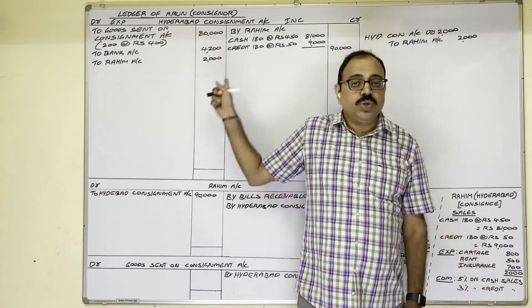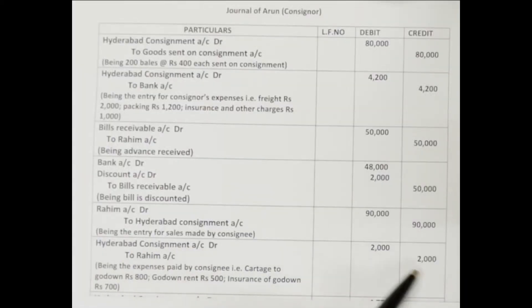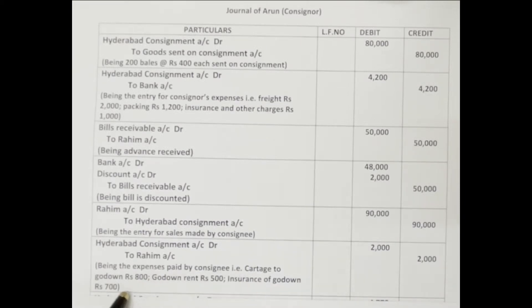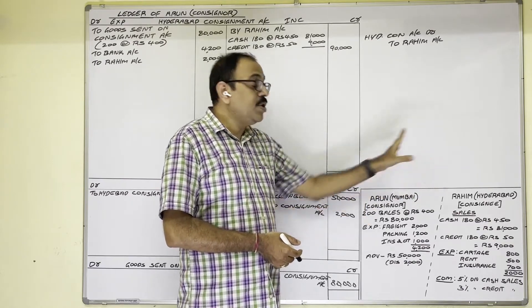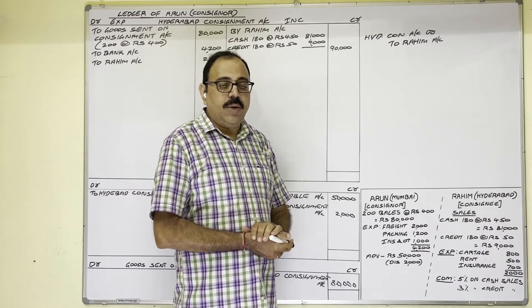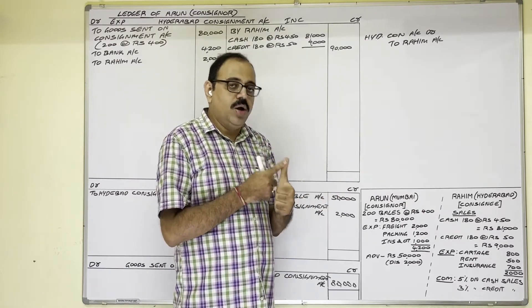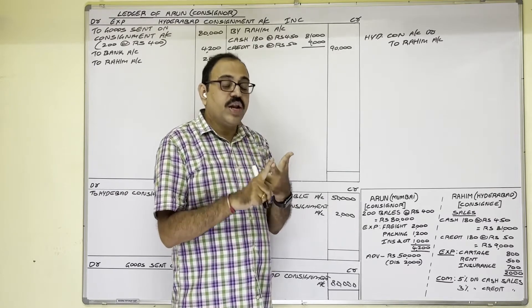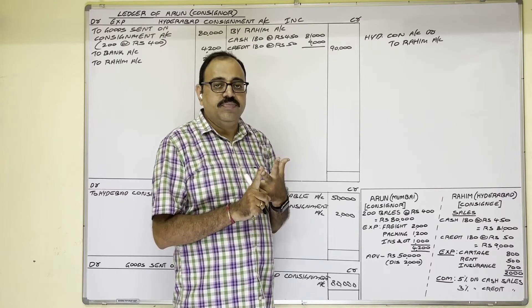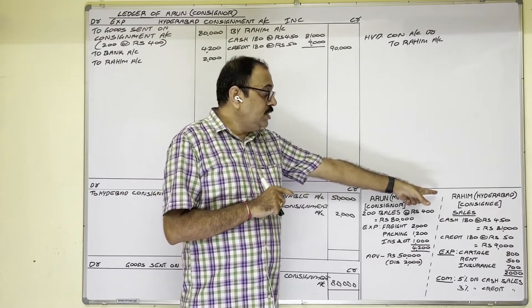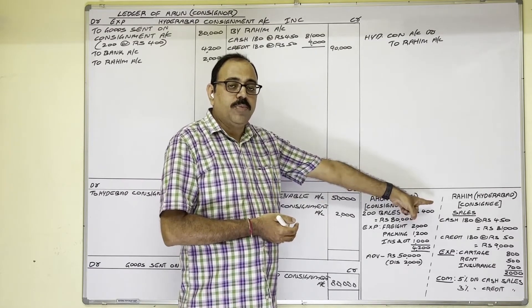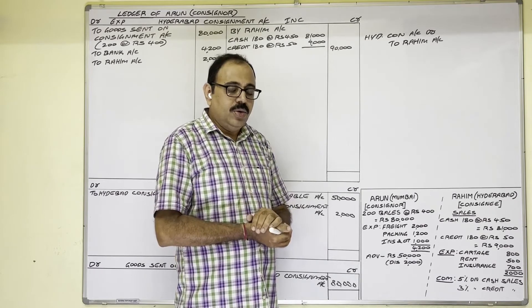Eighth entry: unsold stock. The unsold stock value of 8,500 rupees is shown on the credit side of the consignment account. This is similar to closing stock in the trading account — opening stock/purchases on debit side, sales/closing stock on credit side. Journal entry: Consignment Stock Account Dr. 8,500 / To Hyderabad Consignment Account 8,500. Narration: unsold stock valued. This ensures the consignment account reflects that not all goods were sold.